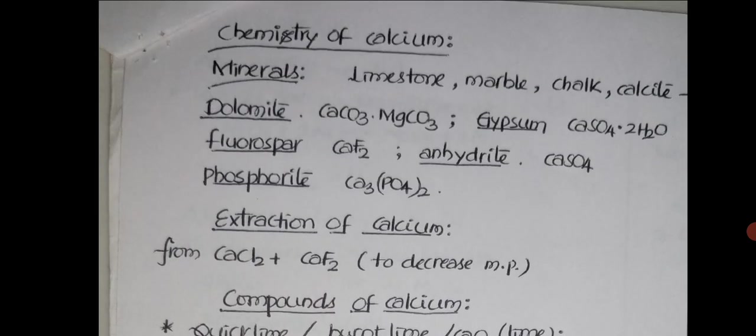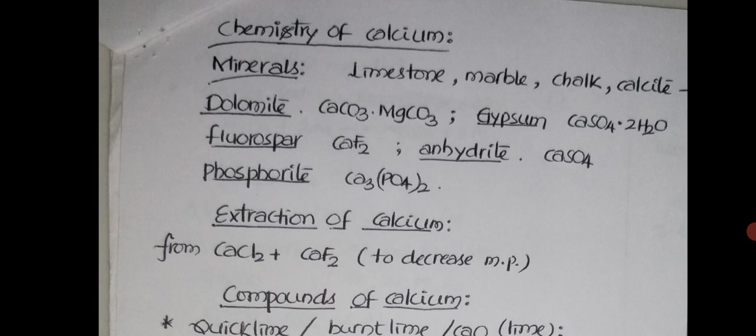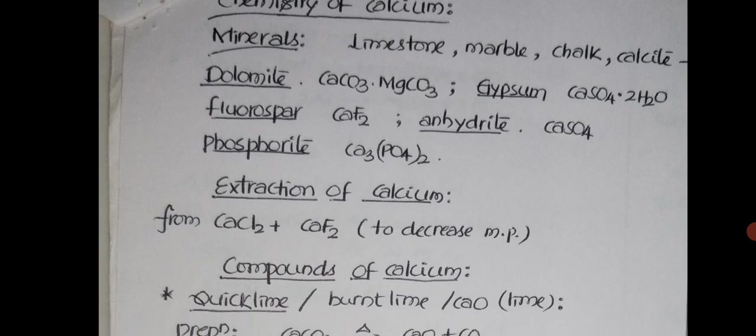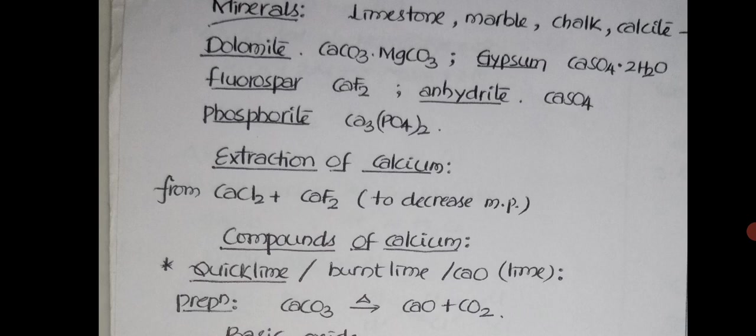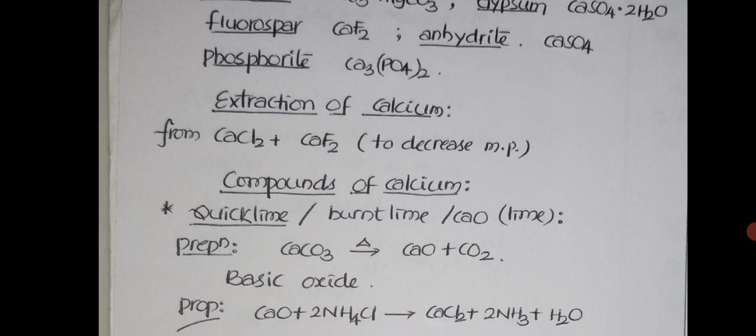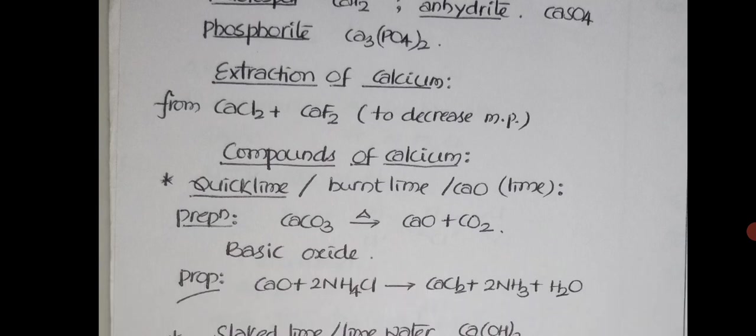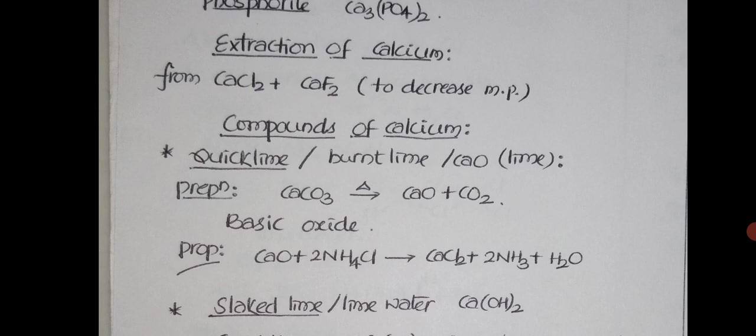Chemistry of calcium. The minerals are limestone, marble, chalk, calcite, all have same formula CaCO3. Dolomite is CaCO3·MgCO3. Gypsum CaSO4·2H2O. Fluorospar CaF2. Anhydrite CaSO4. Phosphorite Ca3(PO4)2. Extraction very similar to magnesium. You take calcium chloride, must be fusion, molten. Then CaF2 is added to decrease melting point. Then go for electrolysis. At cathode you can get calcium.